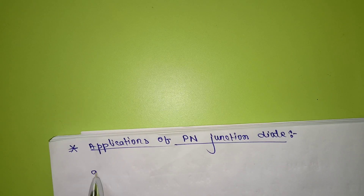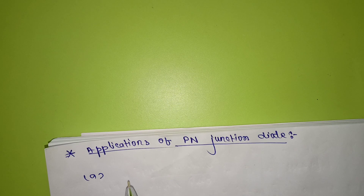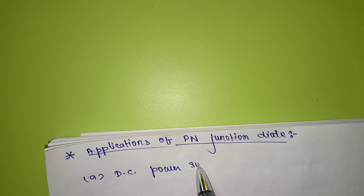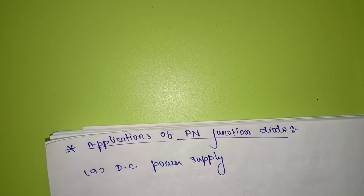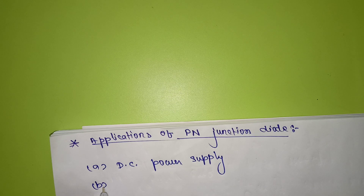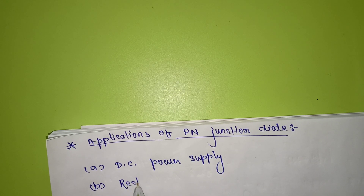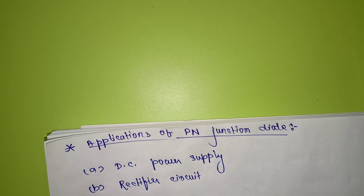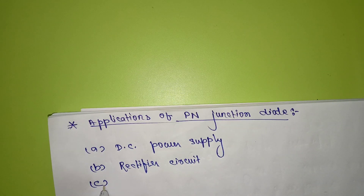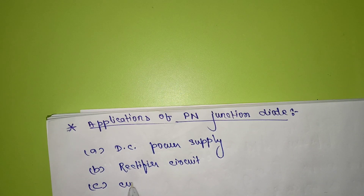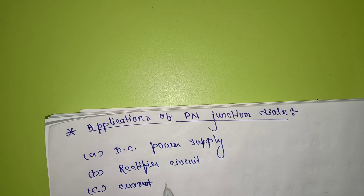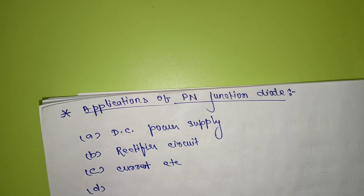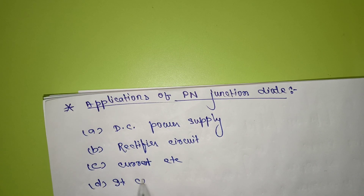So we'll see the applications of PN junction diode. First, it is used as a DC power supply. Second, it is used as an electric circuit. Third, it can be used as a current rectifier.